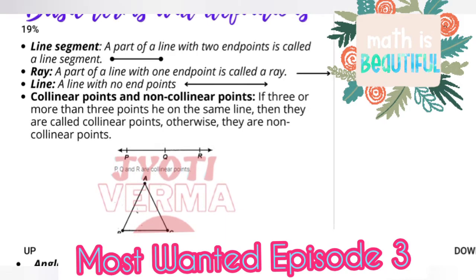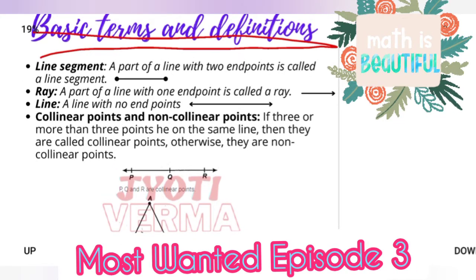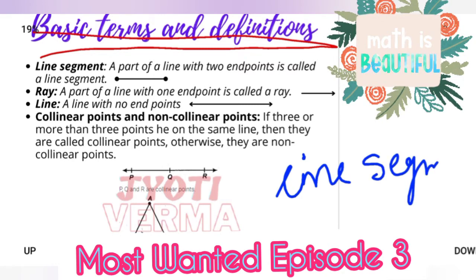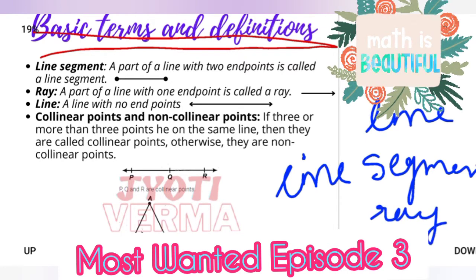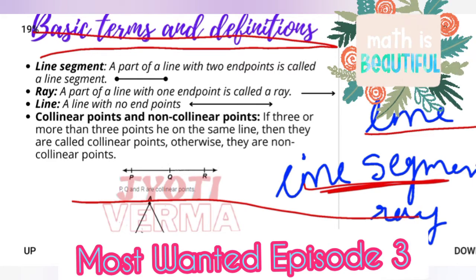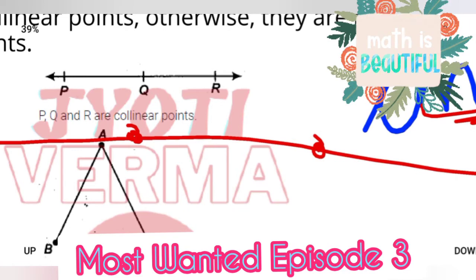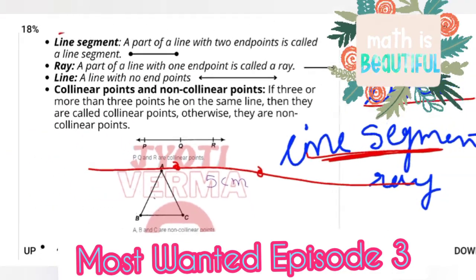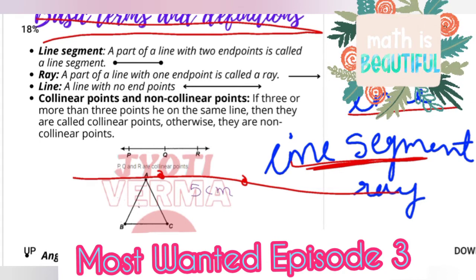The first page is your basic terms and definitions. Now what is a line segment? Many times you will be asked the differences between a line segment, a line, and a ray. A line segment is such a part which has two end points. For example, this is 5 cm — you can see where there are two end points.